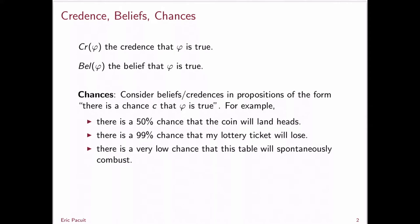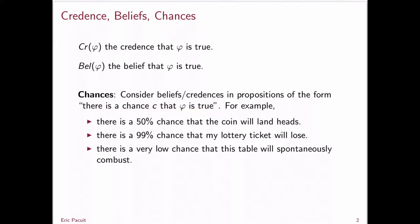What we're interested in in this lecture is the beliefs you might take towards chance propositions, or propositions that include chance. Consider beliefs and credences in propositions of the form: there is a chance C that phi is true. For example, you might believe there is a 50% chance the coin will land heads, or a 99% chance your lottery ticket will lose, or a very low chance that this table will spontaneously combust. The idea is that our credences and beliefs are applied to propositions about the chance that a certain event happens or does not happen.